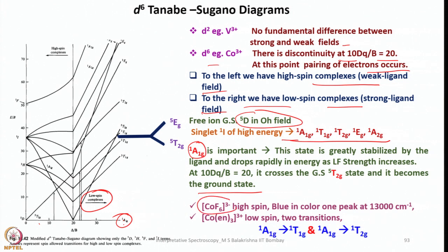For example, if you look into CoF6^3-, high spin, blue in color, one peak at 13000 cm^-1. Here we have two transitions. We have two transitions here: 1A1g to 1T1g here, and the other is 1A1g to 1T2g here. These two transitions are there, whereas here we see only one transition in case of CoF6^3-. You can very nicely identify from this d6 Tanabe-Sugano diagram for d6 complexes such as hexafluorocobaldate 3- and tris-ethylenediamine cobalt 3+, a low spin complex which shows two transitions.